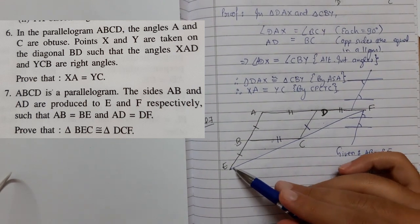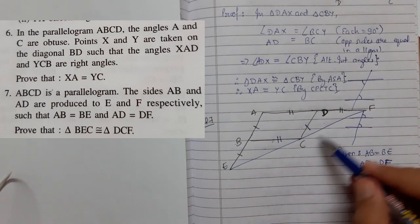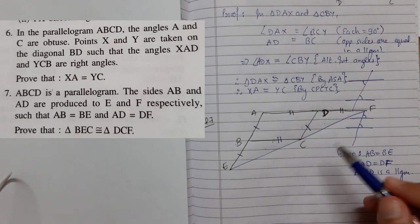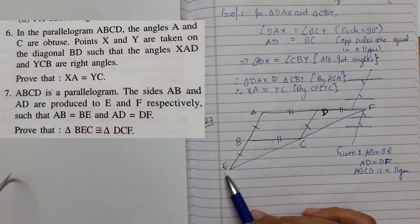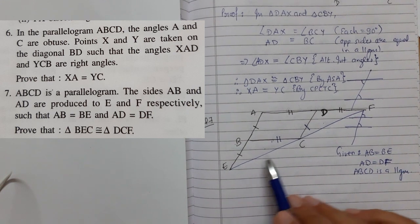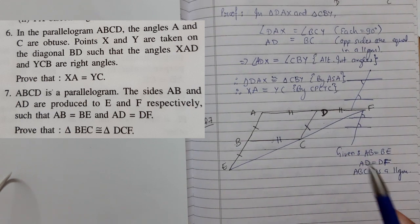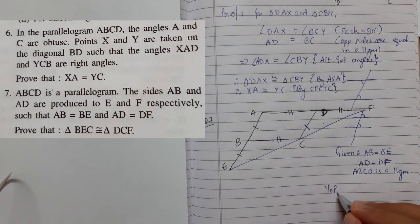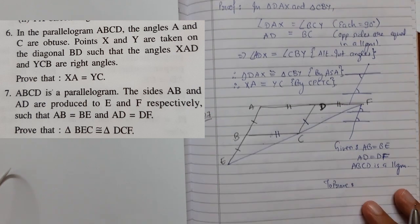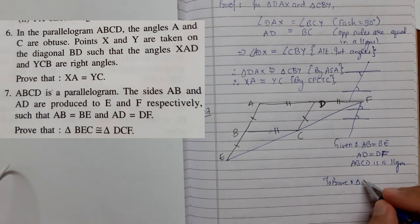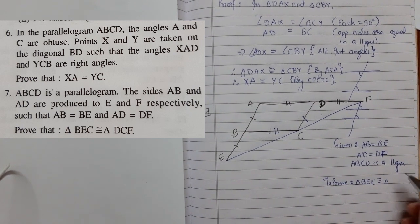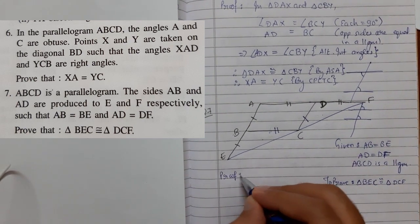In first look it seems as if E, C, F is a straight line, but it is not given, so we will not assume it. Unless it is stated that it is a straight line, we treat it as unknown. We join EC for triangle BEC and CF for triangle DCF. EF being a straight line is not established. So our goal is to prove triangle BEC congruent to triangle DCF.